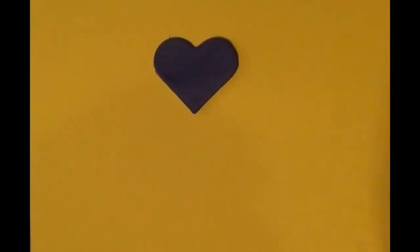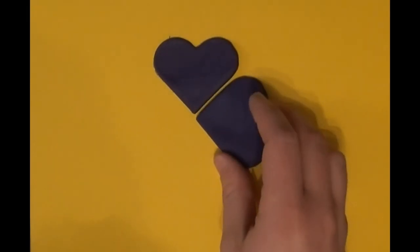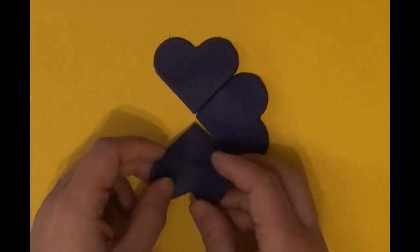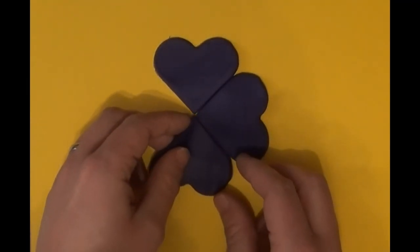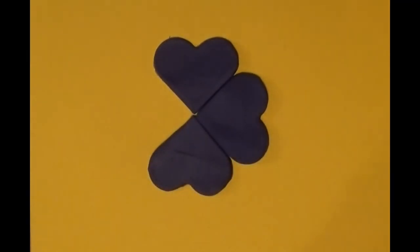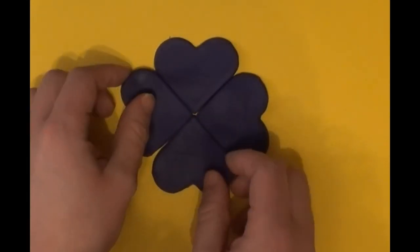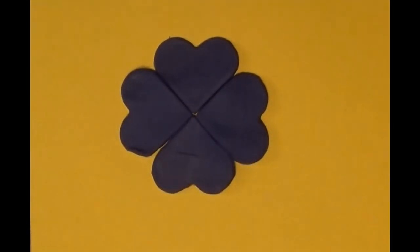Since we're on plants and the heart shape, we can put one heart like that, put another heart next to it, put another heart next to that one, and put another heart next to that one. And when we wedge them all together, we have a flower.